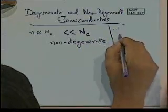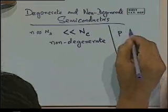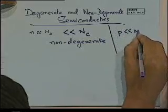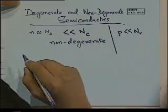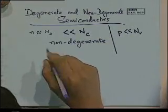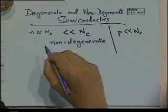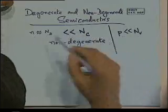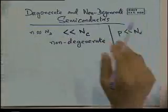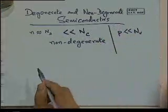The same argument applies for holes in a p-type: p or N_A is much lower than N_V, the density of states in the valence band. As long as either of these conditions apply — donor concentration lower than N_C for n-type, or acceptor concentration lower than N_V for p-type — it's a non-degenerate semiconductor and our equations hold good.